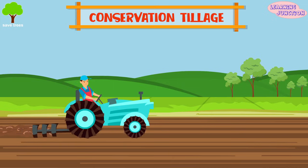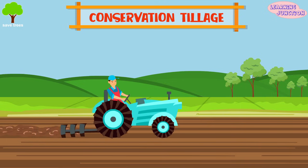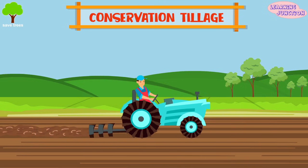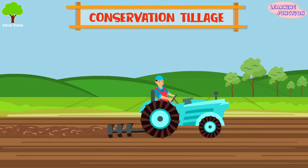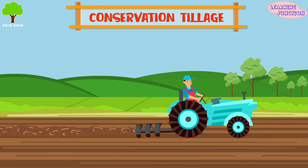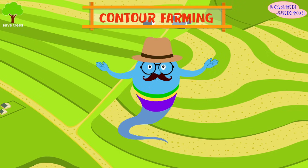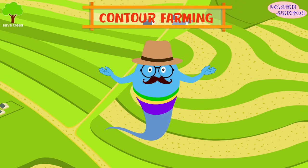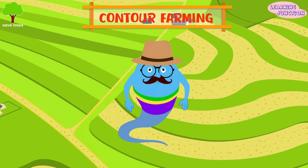Conservation tillage: methods such as no-till planting and diking leave field surfaces covered with crop residue that protects the soil from eroding forces. Contour farming: planting crops in rows around a hill reduces the risk of erosion.